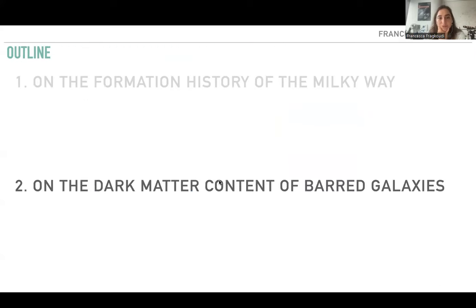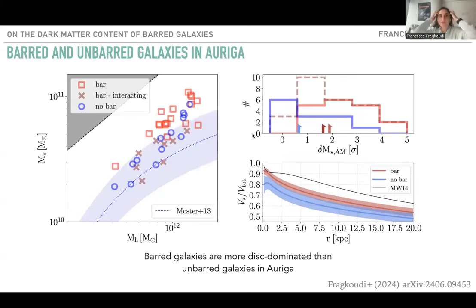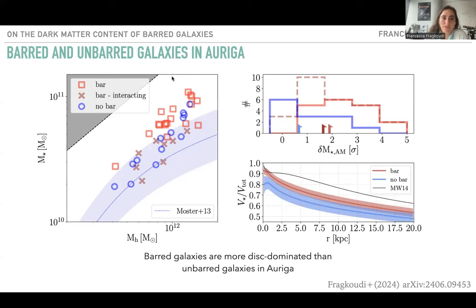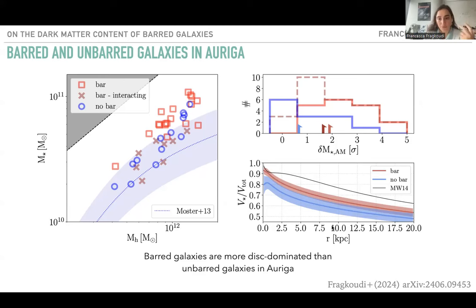In the time I have left, I want to briefly touch on the dark matter content of barred galaxies. With very recent work, we explored the difference in dark matter content of barred and unbarred galaxies in Auriga. Looking at the stellar mass to halo mass relation, barred galaxies for a given halo mass have a higher stellar mass than unbarred galaxies. If we look at the baryon dominance - the circular velocity from the stellar component over the total circular velocity - the barred population has a higher baryon dominance than the unbarred population. This makes sense because a more baryon dominated galaxy is more unstable to bar formation and therefore more likely to form a bar.